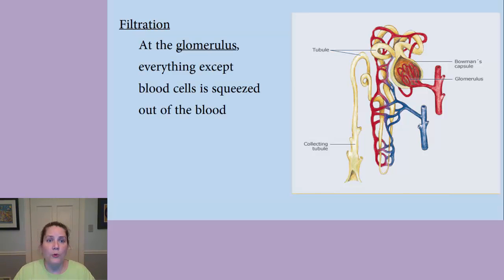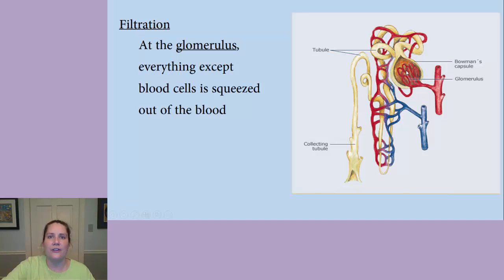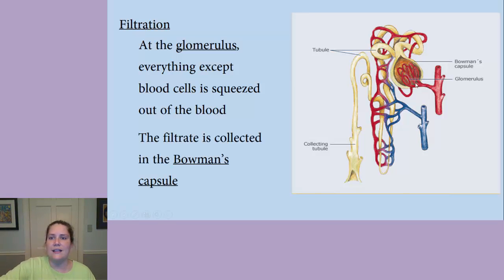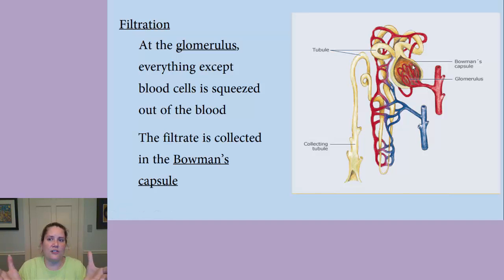Zooming in on the nephron: the renal artery brings blood from the heart to the kidney, and it comes into a network of capillaries all bundled up called the glomerulus. At the glomerulus, there is intense pressure, and basically everything except blood cells — including water, salts, and ions — gets squeezed out of the blood. It all gets collected in something called the Bowman's capsule. So everything except blood cells gets squeezed out and goes to the Bowman's capsule.